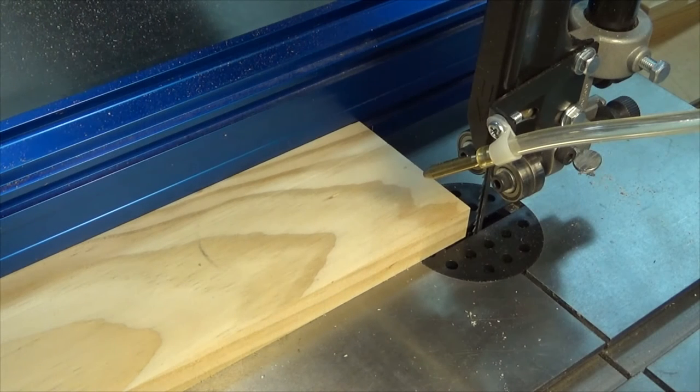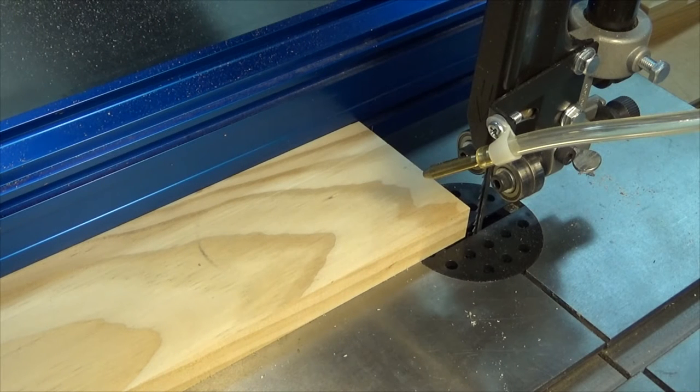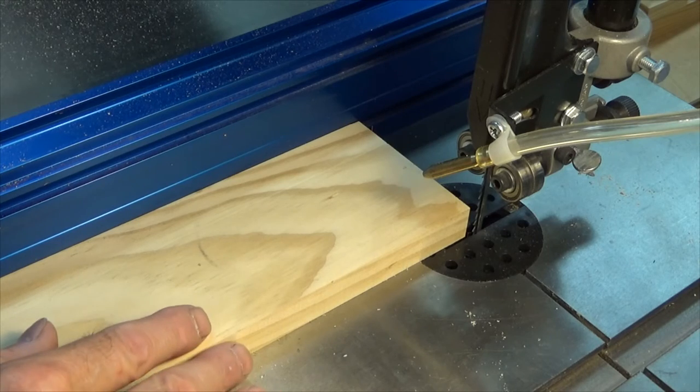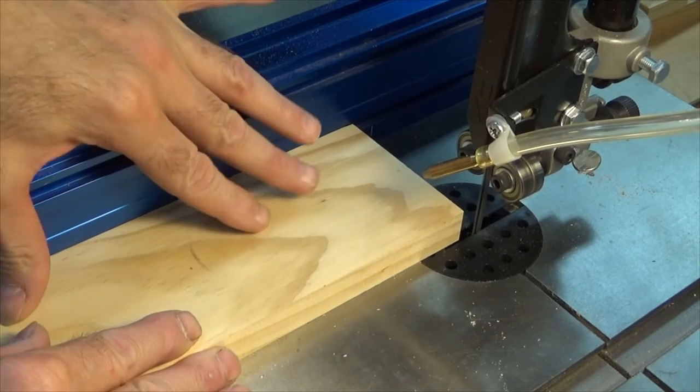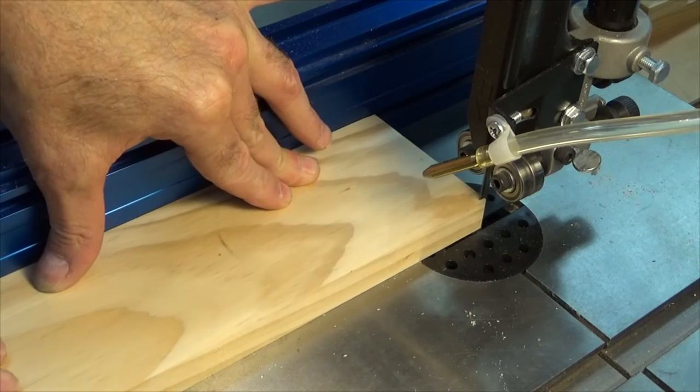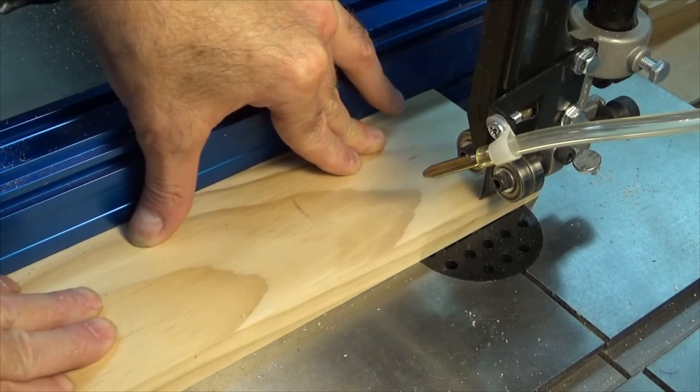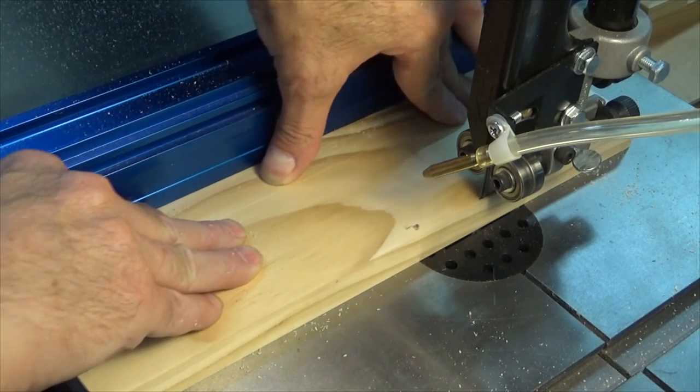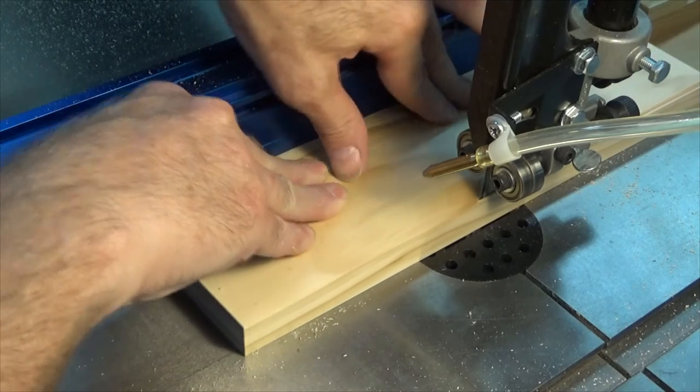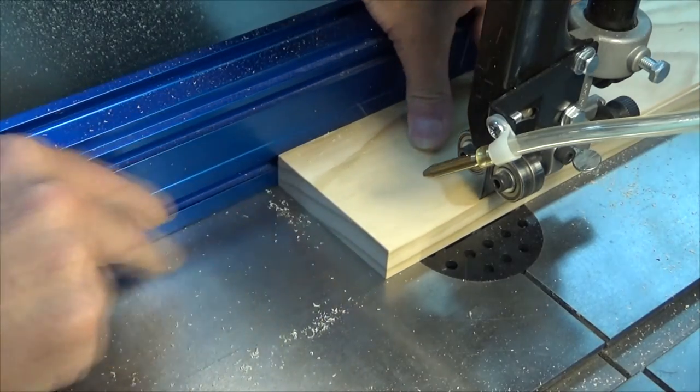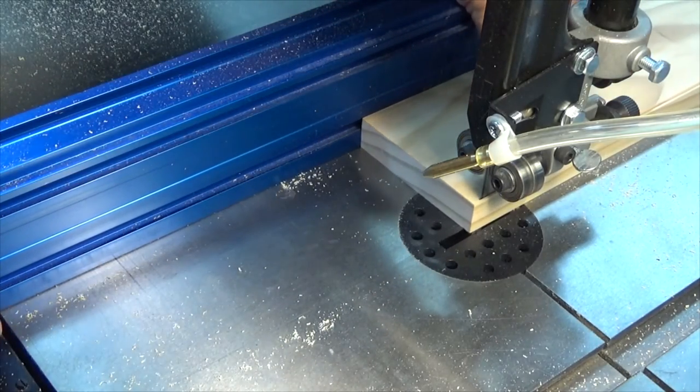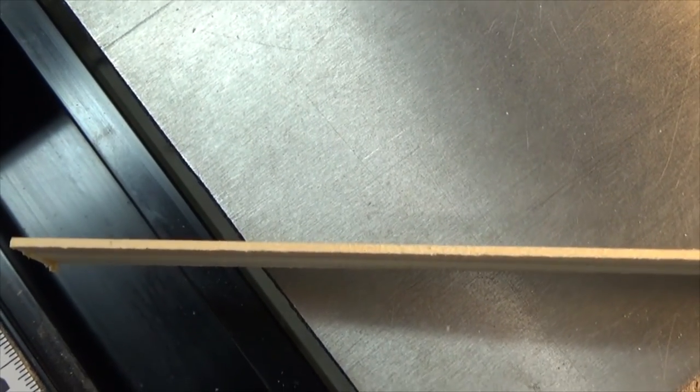Now I'm going to rip a piece of wood using the fence, which as we said before is set up exactly parallel with the miter gauge. If you look at the thin piece of wood ripped from our stock, you'll notice that it's uniform thickness all the way through.